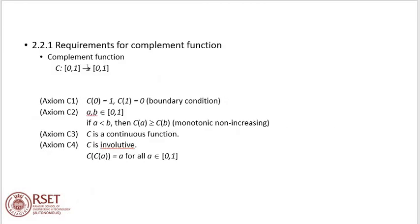This complement function C satisfies the following axioms. Axiom C1: C(0) = 1 and C(1) = 0. This is known as the boundary condition. Second axiom C2: for every A, B element of the closed interval [0,1], if A is less than B, then C(A) is greater than or equal to C(B). This is called the monotonic non-increasing property.